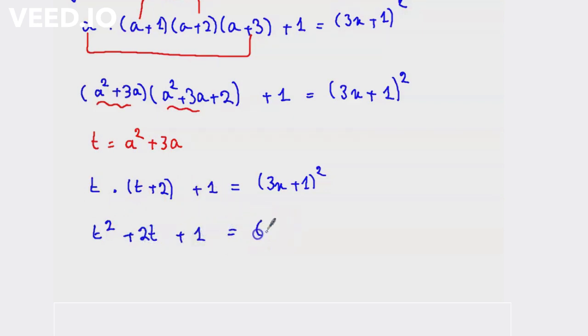Now the left hand side can be turned into (t + 1)² equal to (3x + 1)².